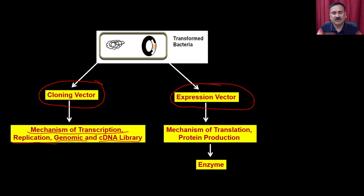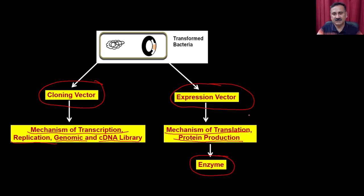So that is how you are going to use the cloning vector. The cloning vector can also be used for studying the mechanism of transcription, replications, and the preparation of the genomic and cDNA library. Whereas the expression vector is exclusively used for studying the mechanism of translation or enzyme production, and ultimately it gives you the enzyme of your interest. Enzyme production is a complicated process and it requires discrete steps.